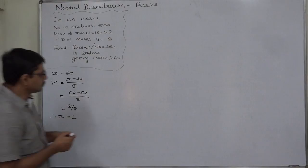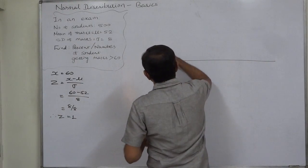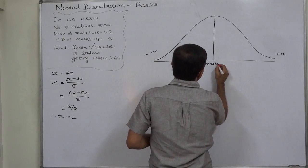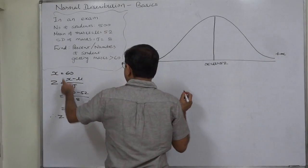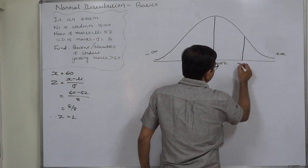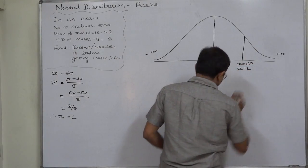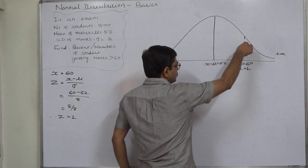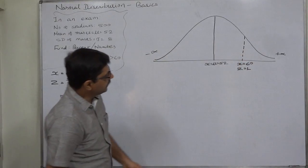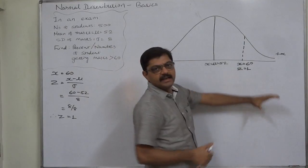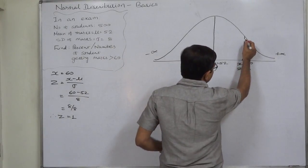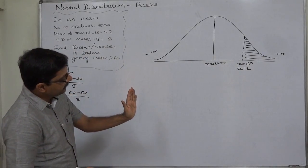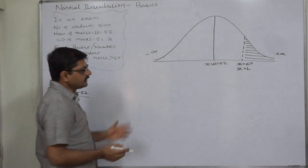Now sketch the curve: X equals mu equals 52 at the center. Since X is 60, which is greater than the mean, it falls on the right-hand side, where Z is exactly 1. We are interested in marks greater than 60, not exactly 60, so it is tradition to draw this line as a dotted line. We are interested only in the region where X is greater than 60.